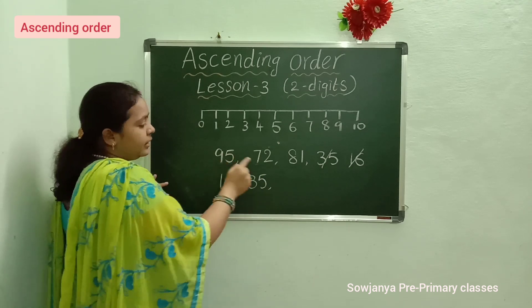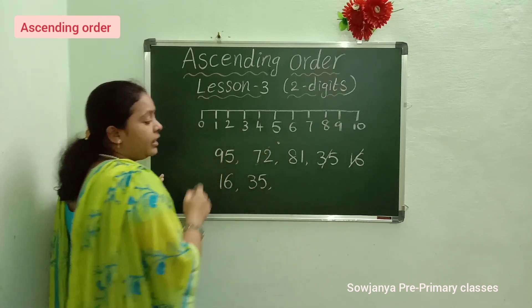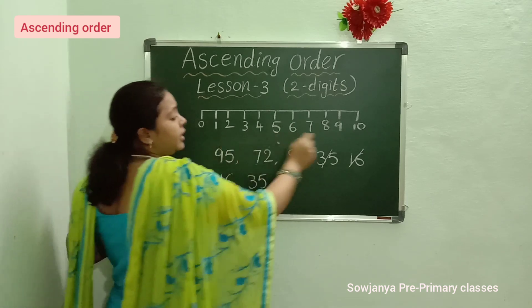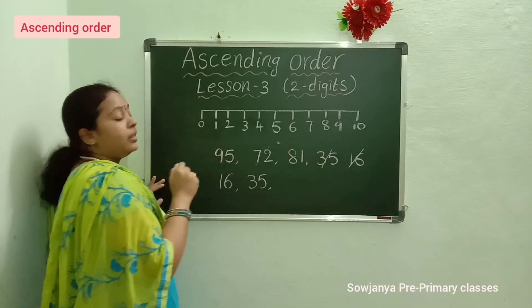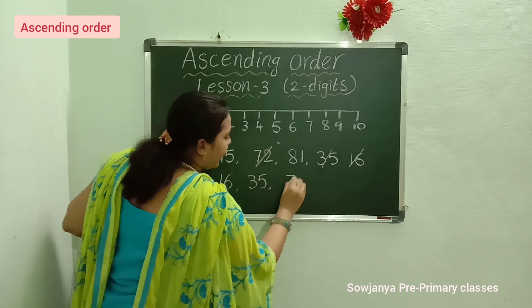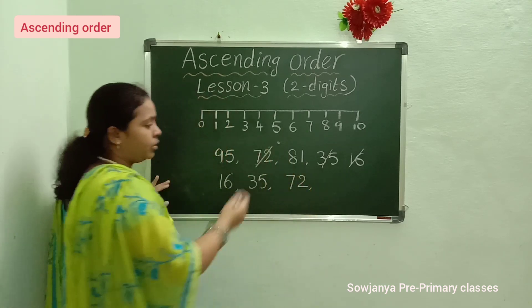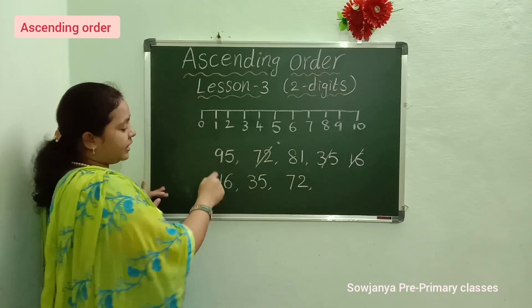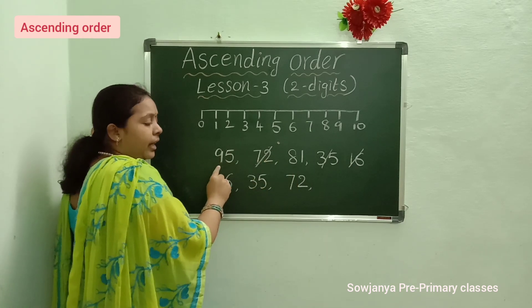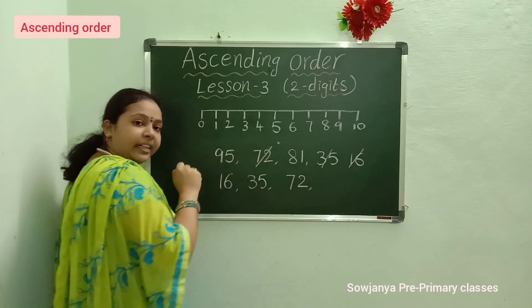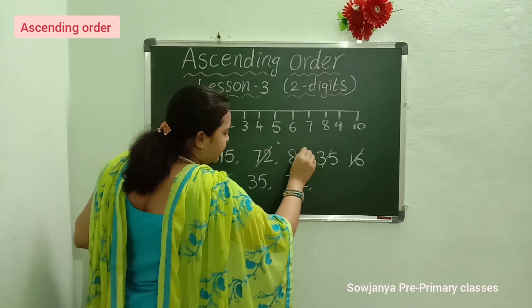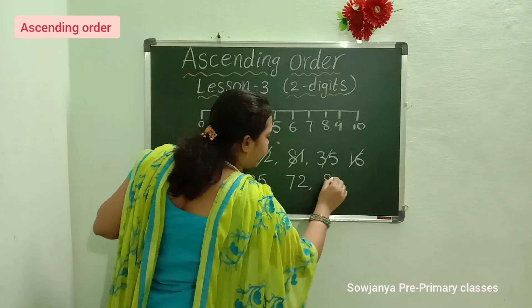Now we have 9, 7, and 8 in the 10's place. Which is the small number? Observe on the number line. Yes, 7. So cross out 72 and write 72 here. Next, we have 95 and 81. 9 is the big number and 8 is the small number. So cross out 81 and write 81 here.